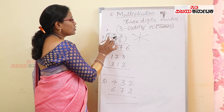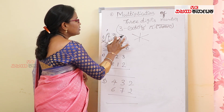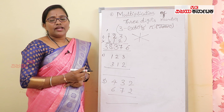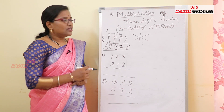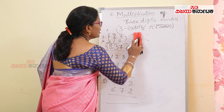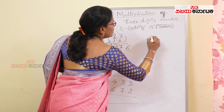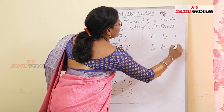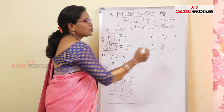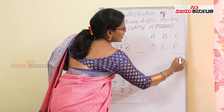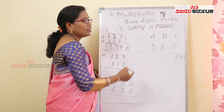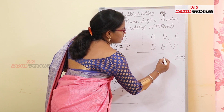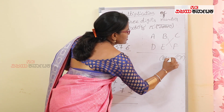The product of 123 with 312 is 38,376. Observe the pattern. If I take 3 numbers ABC and DEF: the unit digit place is C into F, and the 10th digit place is a cross-multiply — that is BF plus EC.